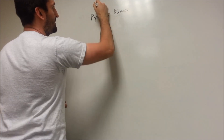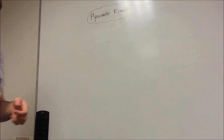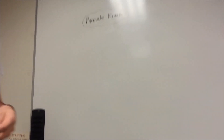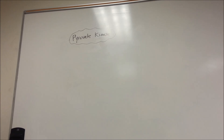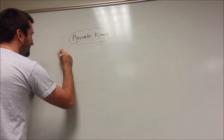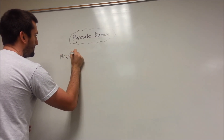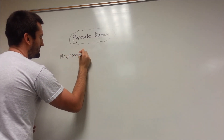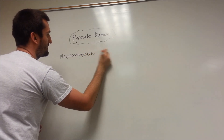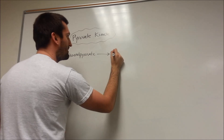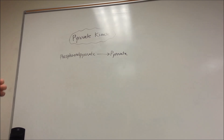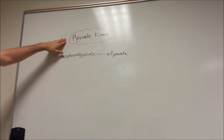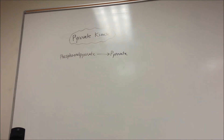The next enzyme is pyruvate kinase. This is the last enzyme in the glycolysis pathway. Phosphoenolpyruvate gets converted finally into pyruvate, our star player and end goal of glycolysis.